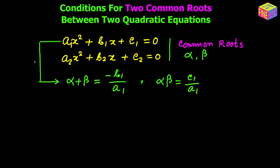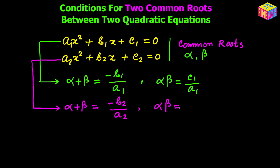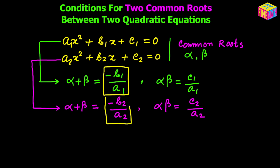Now from the second equation, doing the same thing, we get α + β = −b₂/a₂, and similarly α × β = c₂/a₂. Now the α + β values from both equations — I'm highlighting them with a yellow box — they both represent the value of α + β, so they have to be equal.